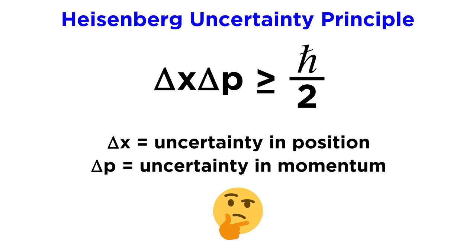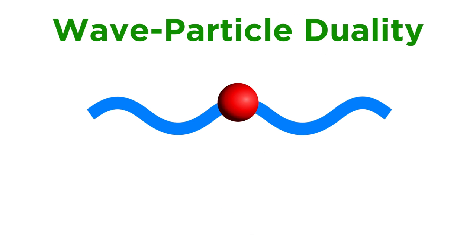So why is this the case? Why does such a limit exist? Why is this the way we must approach the description of quantum systems? The way we approached this question when we were coming at it from a conceptual standpoint was to talk about wave-particle duality.